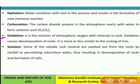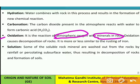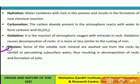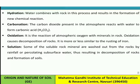The third chemical weathering process is oxidation — the reaction of atmospheric oxygen with minerals in the rocks, causing decomposition. It is more or less similar to the rusting of iron. The fourth process is solution, where soluble rock minerals are washed out from the rocks by rainfall or percolating water, resulting in decomposition of rocks and formation of soil. In all four processes, a chemical reaction takes place.